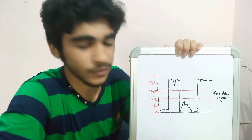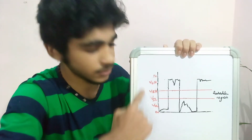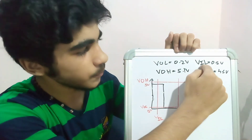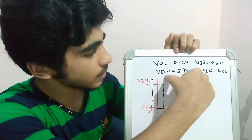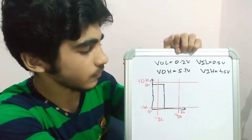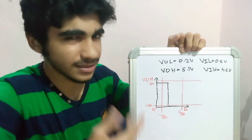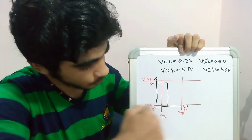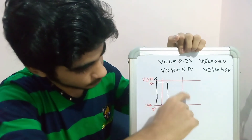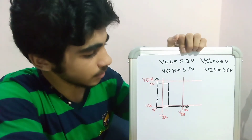It is now working in our favor because we have these voltage thresholds. One thing to remember when setting these threshold values is that you should satisfy the static discipline. Here is an example: voltage output low (VOL) is 0.2V, voltage input low (VIL) is 0.5V, voltage output high (VOH) is 5.1V, and voltage input high (VIH) is 4.5V. I have represented it here — you can see VOL, VOH, VIL, and VIH.